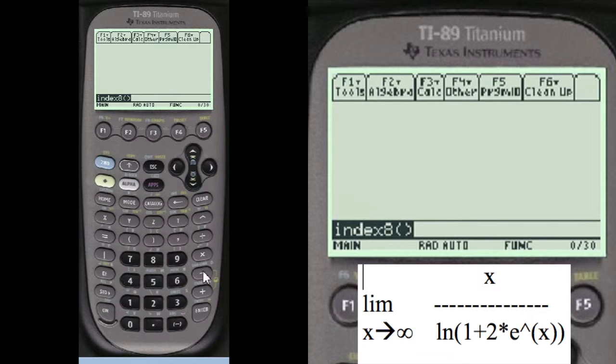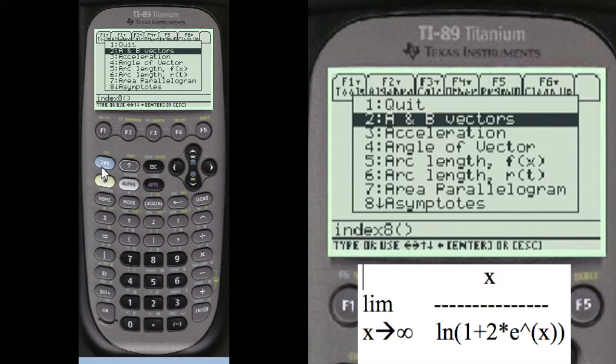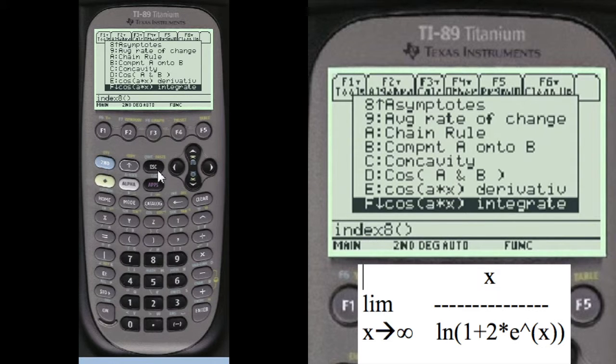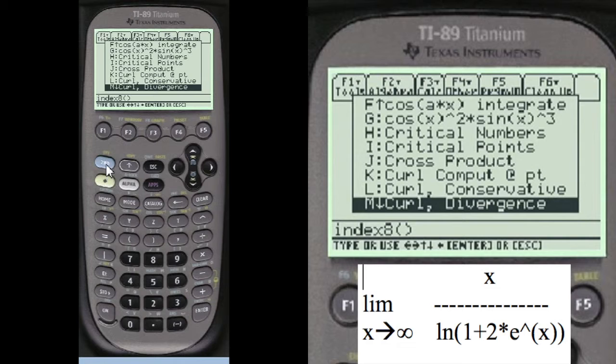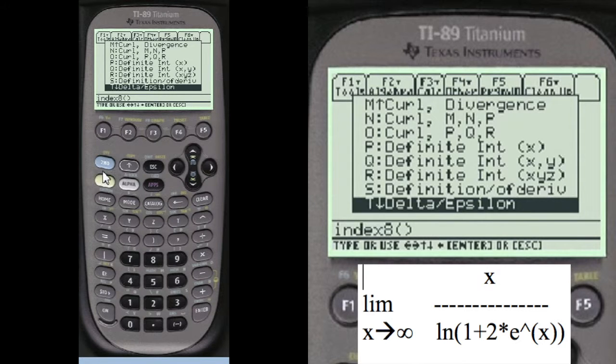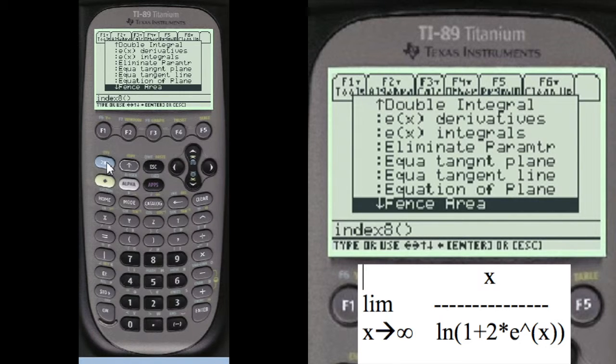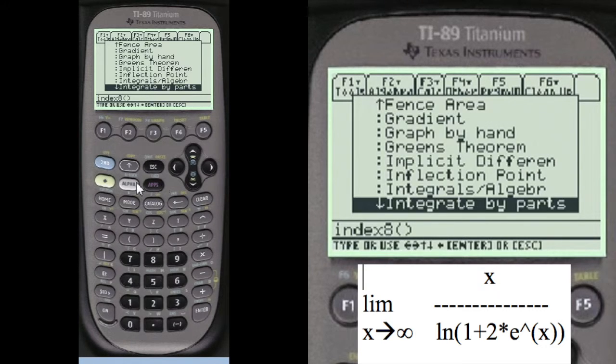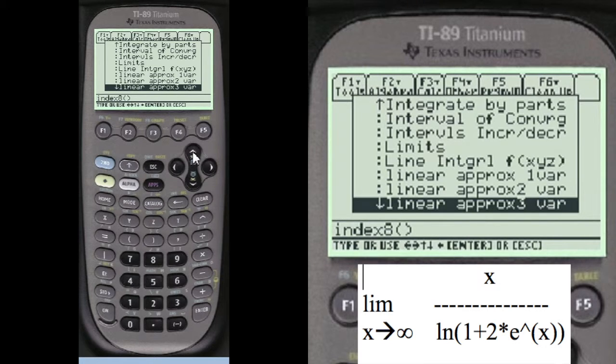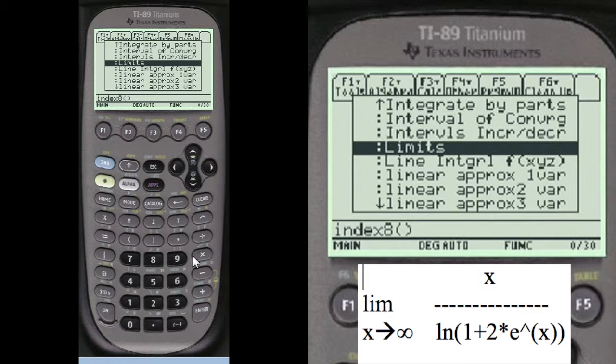So let's do an index 8 to get to my menu. I'm going to scroll down here, press second screen by screen to get the menu quick, at least quicker. And get to limits, choose limits.